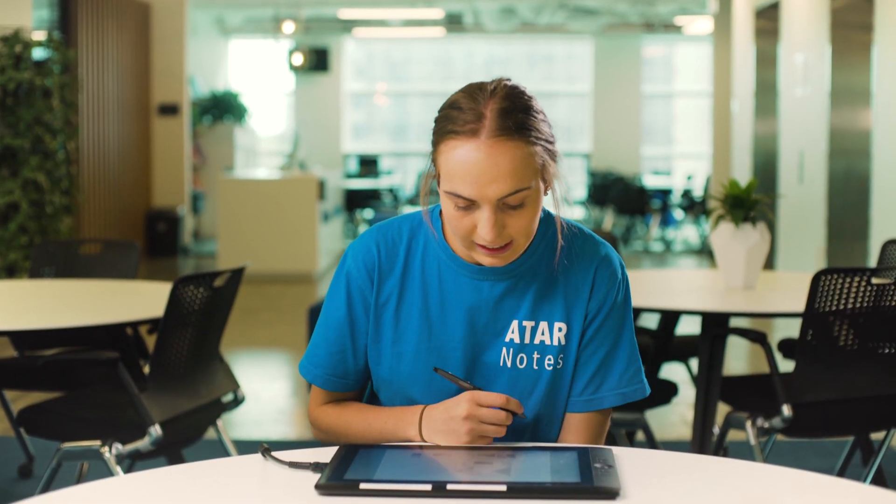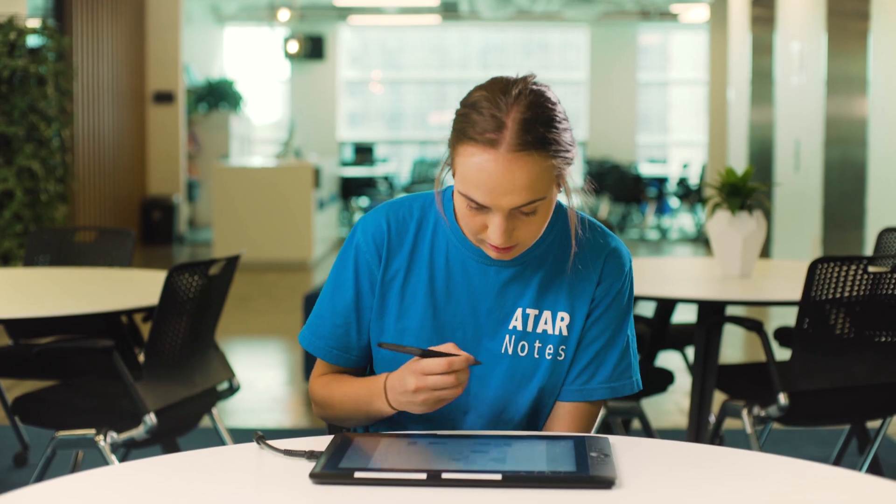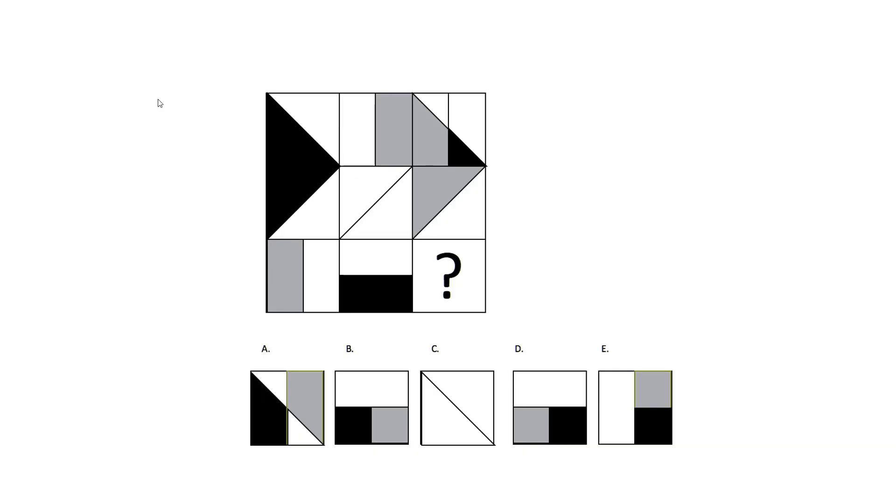In this question you can see that we're moving across the rows. If you look at the top left box you have a black triangle. As you move across in the second column of the top row you have a grey rectangle. When we add them together in the third column we get a new image.